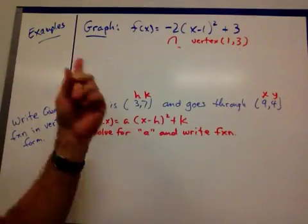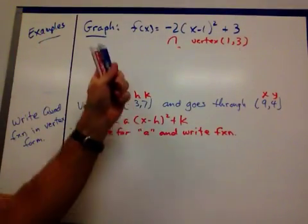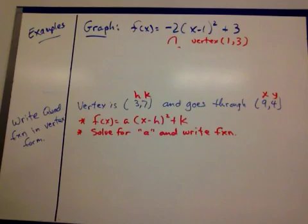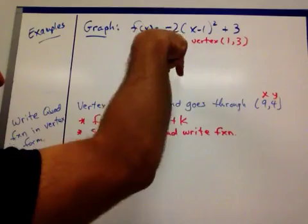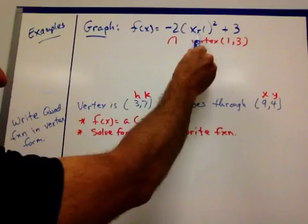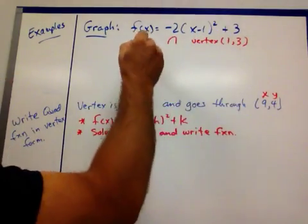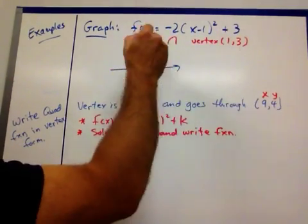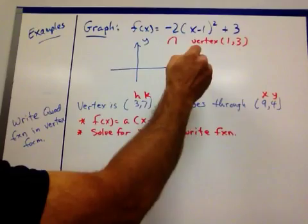Nice catch. All right, let's take a look at some examples here. Graph f of x equals negative 2 times x minus 1 squared plus 3. Because your a is negative, you know you're going to open down. Think opposite here, so your vertex is going to be positive 1, 3. And the graph would look just like this.